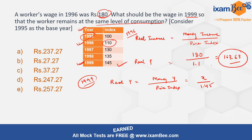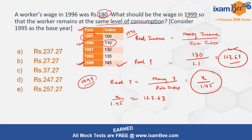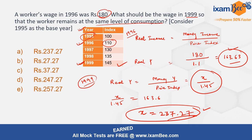For him to stay at the same level of consumption, the real income in 1996 should be equal to the real income in 1999. So we have X divided by 1.45, which should be equal to 163.63. Solving this, X equals 237.27. So this should be his money wages — that's what we had to find out.